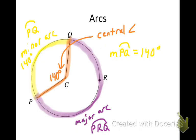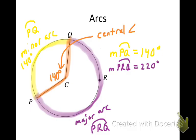There's a relationship between the measure of a minor arc and a major arc that has exactly the same endpoints as that minor arc. Do you know what the measure of arc PRQ would be? Well, there are 360 degrees in a circle, and if 140 degrees is the minor arc, then the other 220 degrees are going to be in the major arc that has the same endpoints. So you can measure arcs in degrees, and an arc is formed by two radii of a circle, or a central angle. The measure of the arc is equal to the measure of the central angle that creates it.